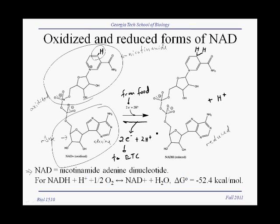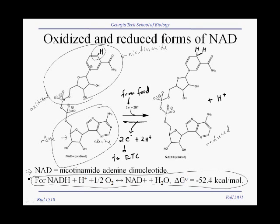NAD can exist in both the oxidized and the reduced forms, and actually goes back and forth. When it accepts electrons from food, NAD+ turns into NADH, and then NADH will carry these electrons to something called the electron transport chain, give up the electrons, and in the process become oxidized back to NAD+. There is a large change in free energy in this oxidation-reduction of NAD+ and NADH.